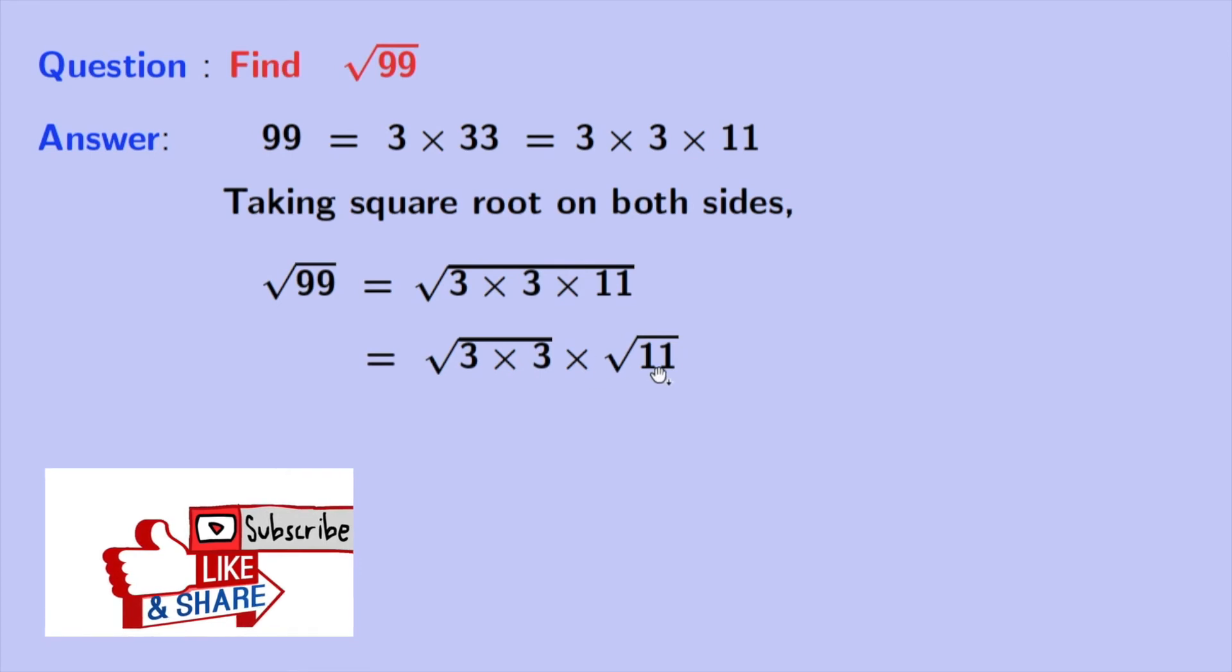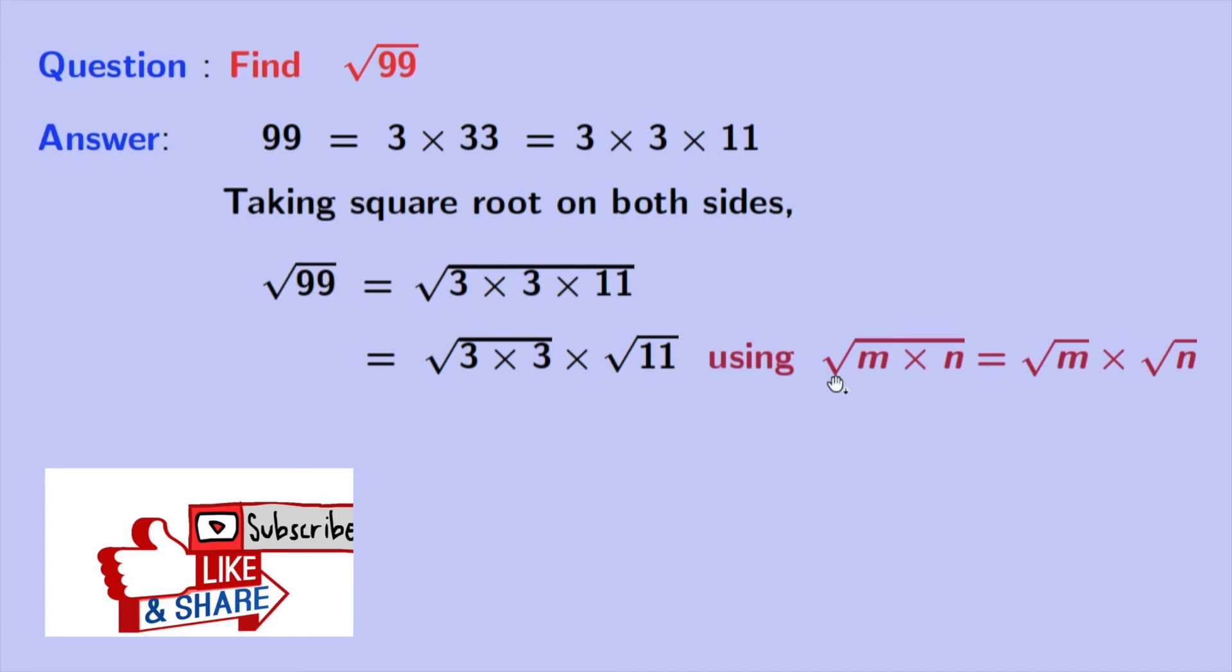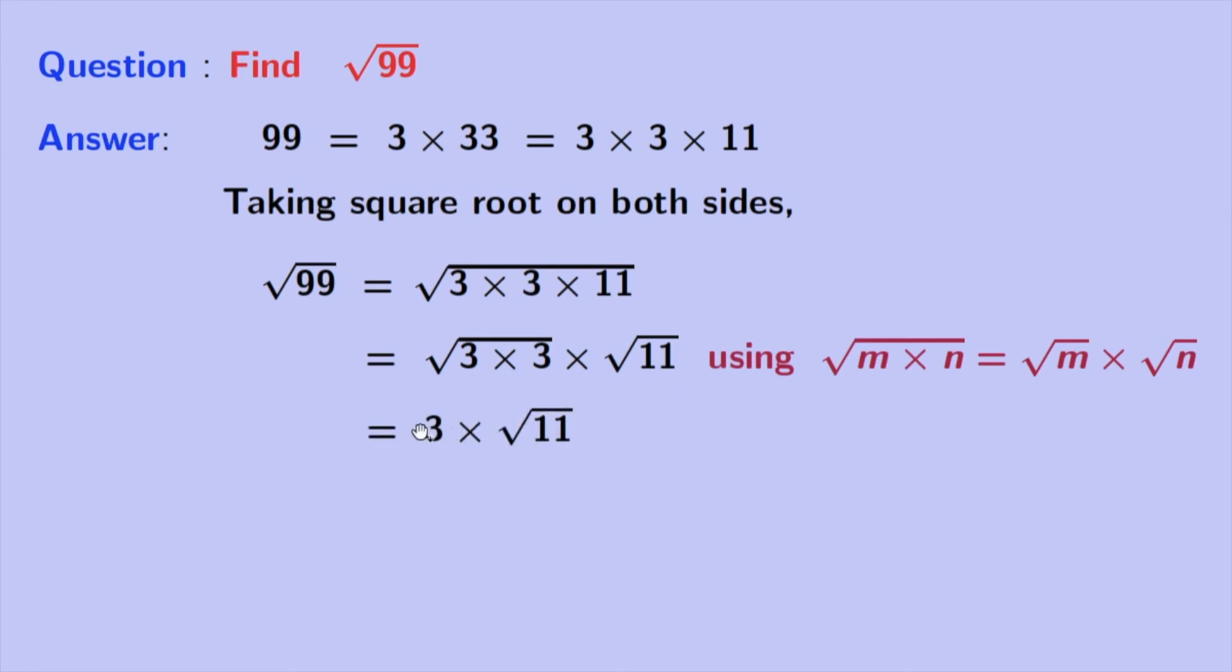Here we have used the rule of square root of m times n is equal to square root of m times square root of n. Now we have 3 times root 11.